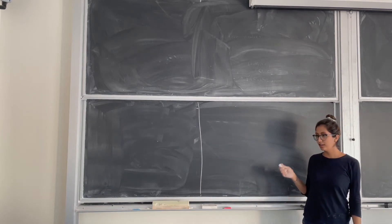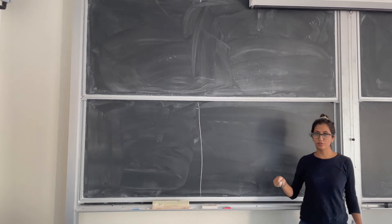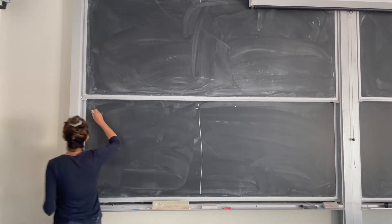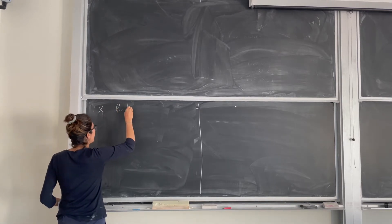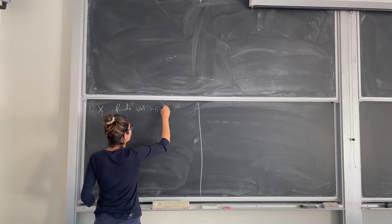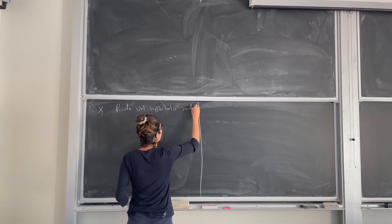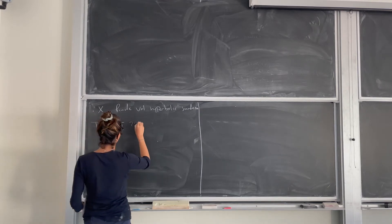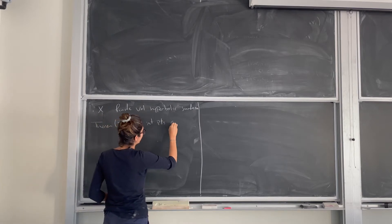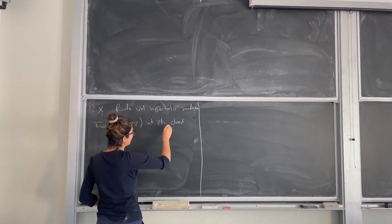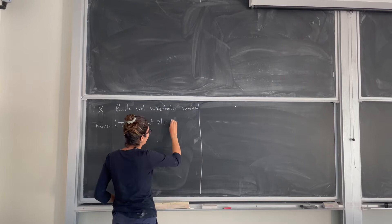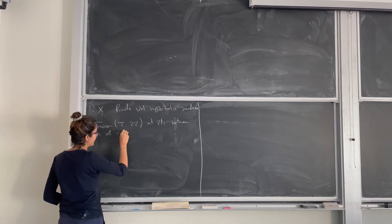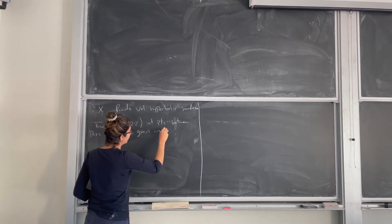This is the second part of the talk. I'm going to explain the equidistribution of intersection points on hyperbolic surfaces, and then we will see the proof. The theorem is that the intersection points of closed geodesics between pairs of closed geodesics are equidistributed on x.